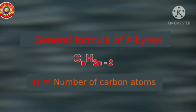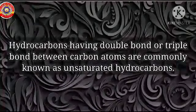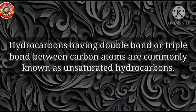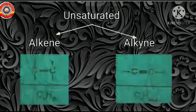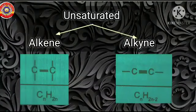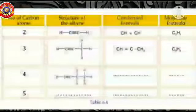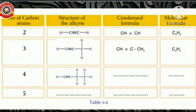The general formula of an alkyne is CnH2n-2. Hydrocarbons having double bonds or triple bonds between carbon atoms are commonly known as unsaturated hydrocarbons. The word 'unsaturated' indicates the presence of either a double bond or a triple bond. Alkenes and alkynes both come under the category of unsaturated hydrocarbons. A table showing the structure of alkynes, their condensed formula, and molecular formula is given - complete it in your notebook.